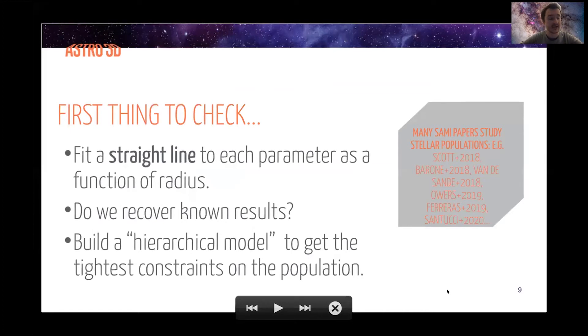So the first thing to check is, am I getting sensible results? A simple thing to do is to take my 2D maps and condense them down into simple one-dimensional profiles. So just metallicity as a function of radius, for example, and see if I recover some known results. I should say here that I'm taking two approaches. The first thing is to simply take each galaxy on its own and fit a straight line. So I get an intercept and a gradient.